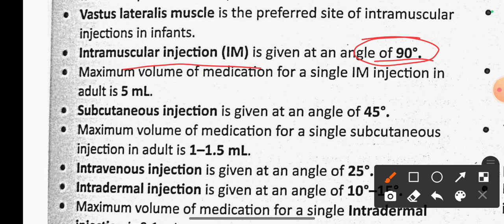Subcutaneous injection is given at a 45-degree angle. The maximum volume of medication for a single subcutaneous injection is 1.5 ml.